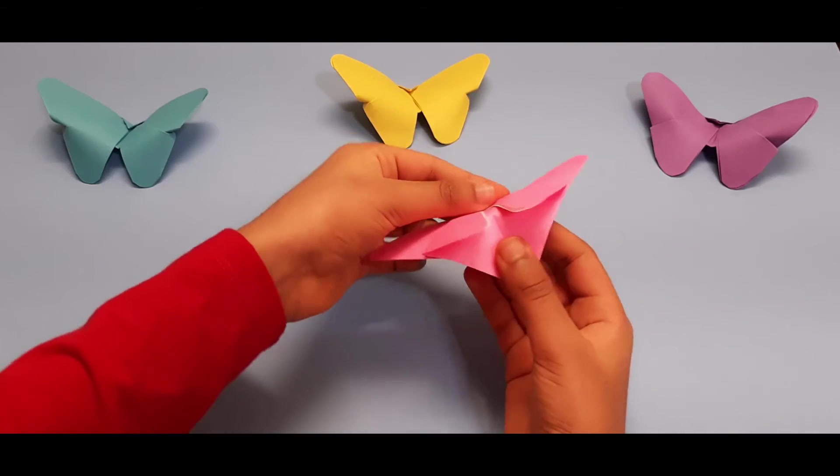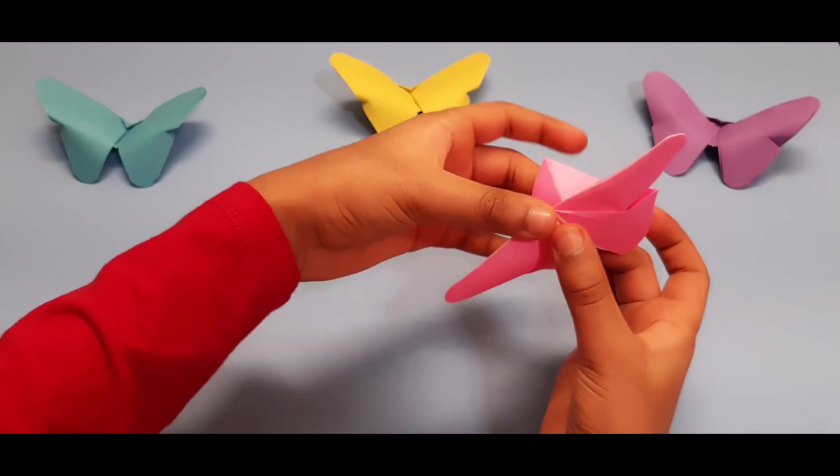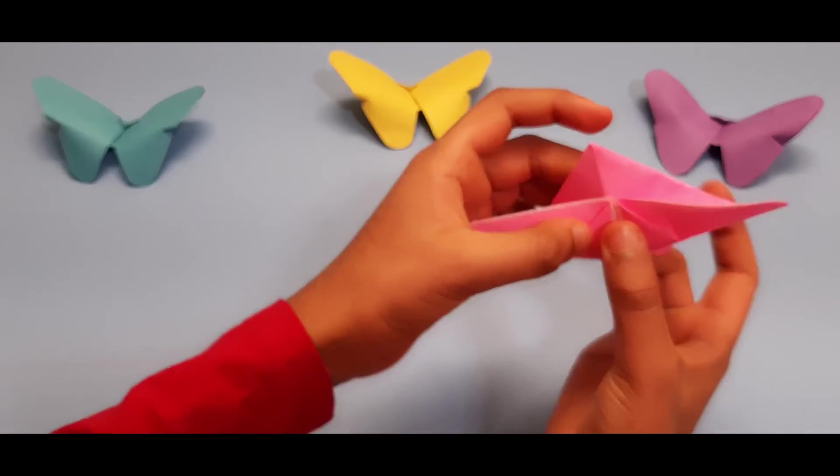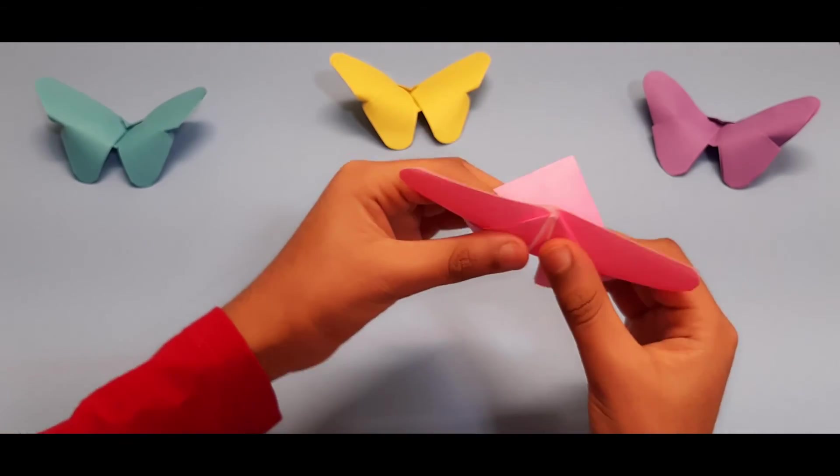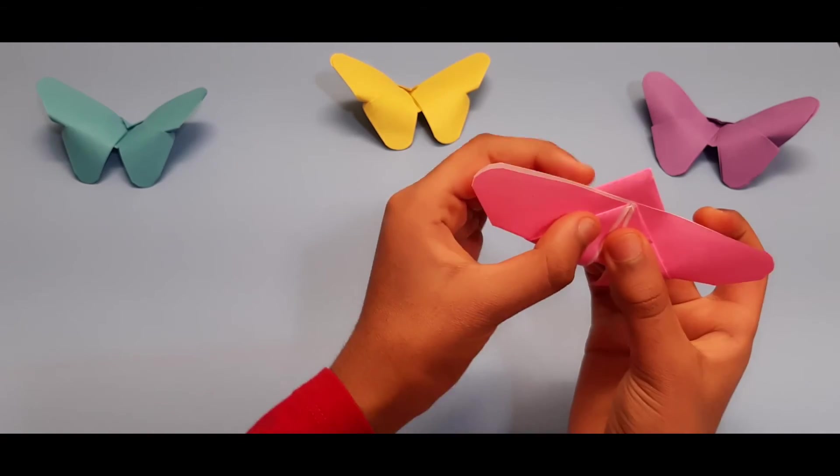Now there should be a flap on the back. You're going to pull that flap all the way up as far as you can, not too far or else it might end up looking a little weird. So about that much, so you have a little tiny triangle at the top.